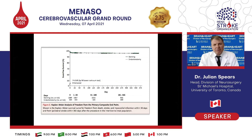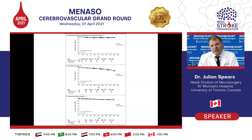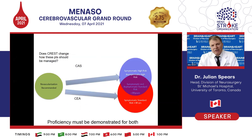The Kaplan-Meier analysis shows freedom from the primary composite event, basically proving non-inferiority for all stroke as well as survival up to five years. The summary was that for severe carotid stenosis in average-risk patients, stenting was deemed not inferior to endarterectomy — an important trial confirming that for asymptomatic carotid disease, stenting is not inferior to endarterectomy.